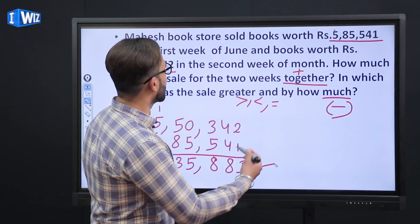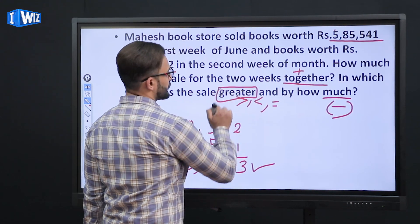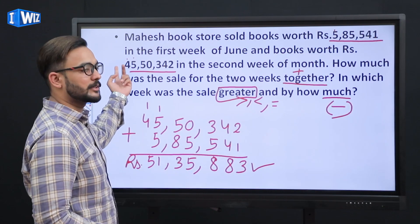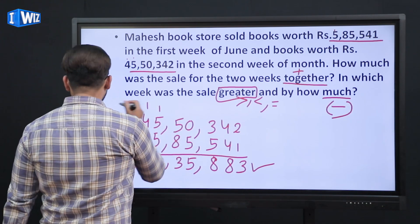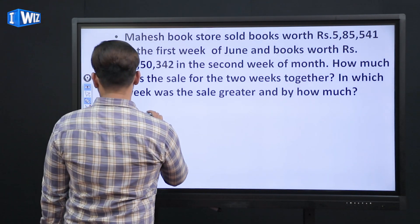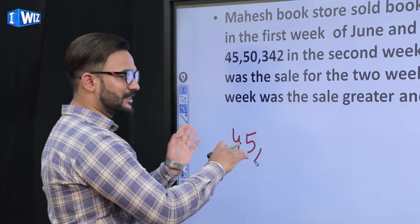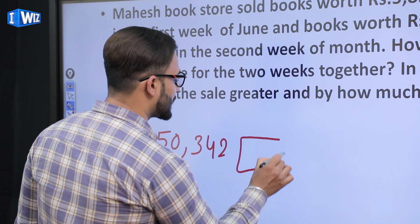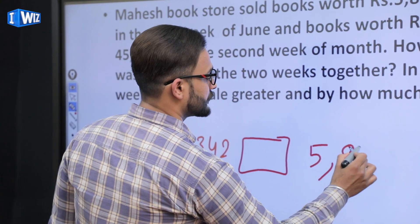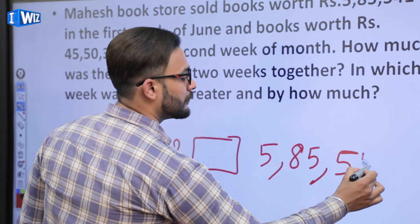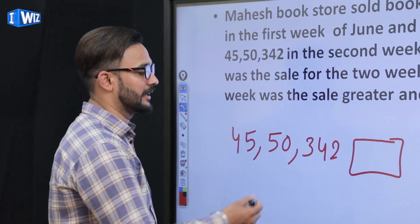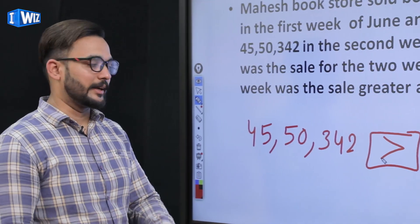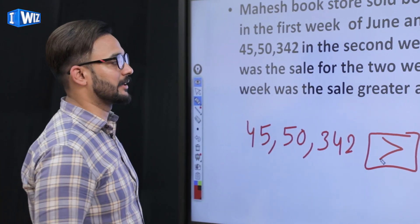Now we need to compare which week had greater sales. As noted earlier, the lakh position has one digit in the first number and two in the second, so the second week's figure is obviously bigger. To represent this, we write the bigger number on the left side and the smaller on the right, placing the greater-than symbol with its open face towards the bigger number and closed side towards the smaller. So, second week > first week.